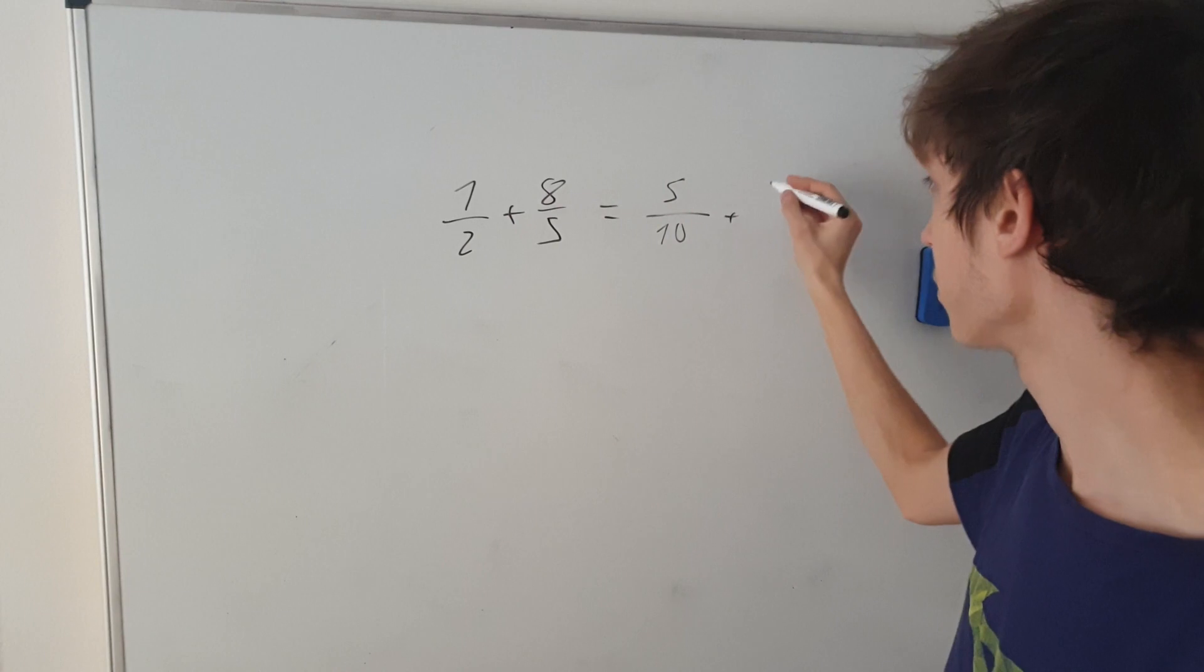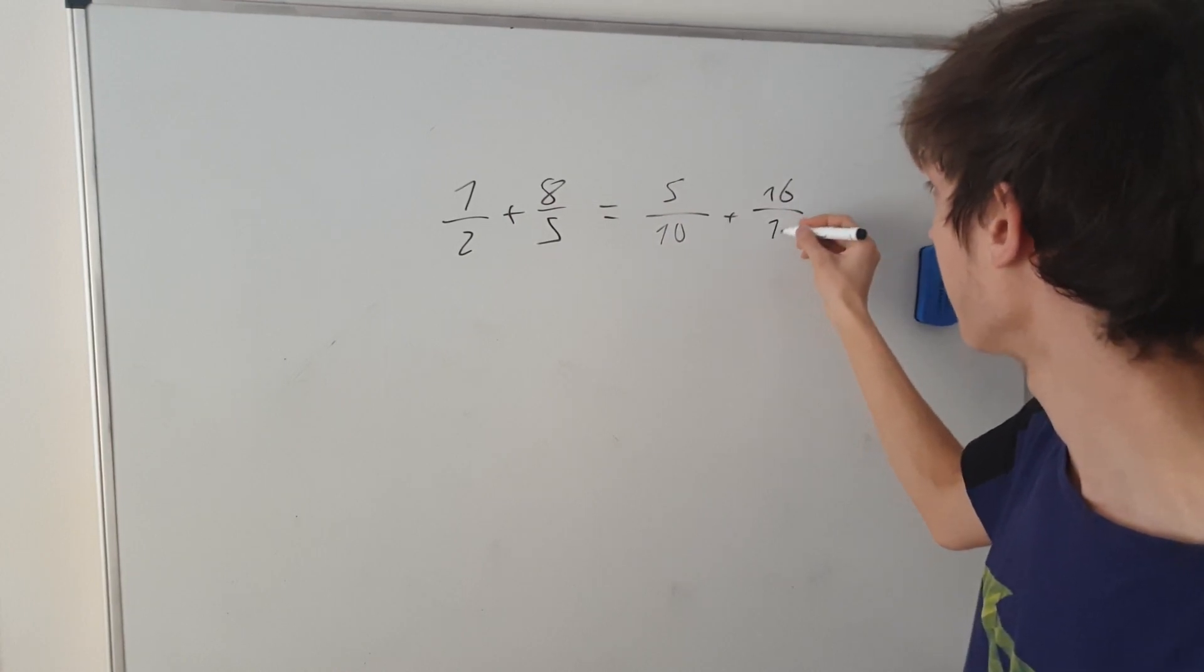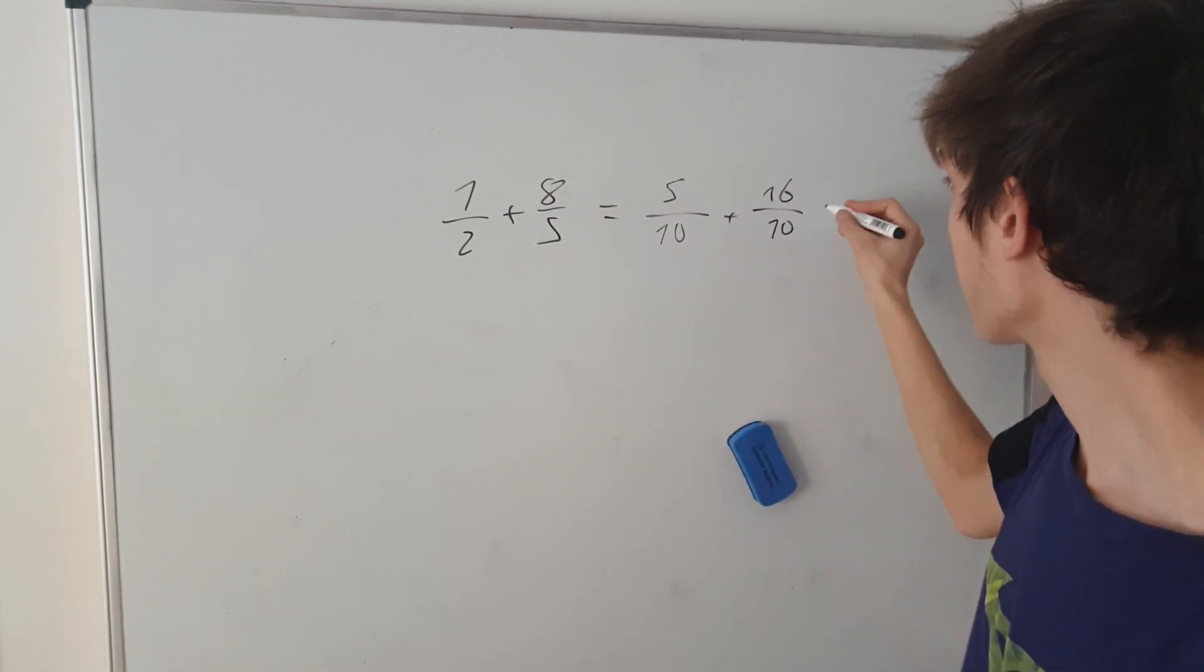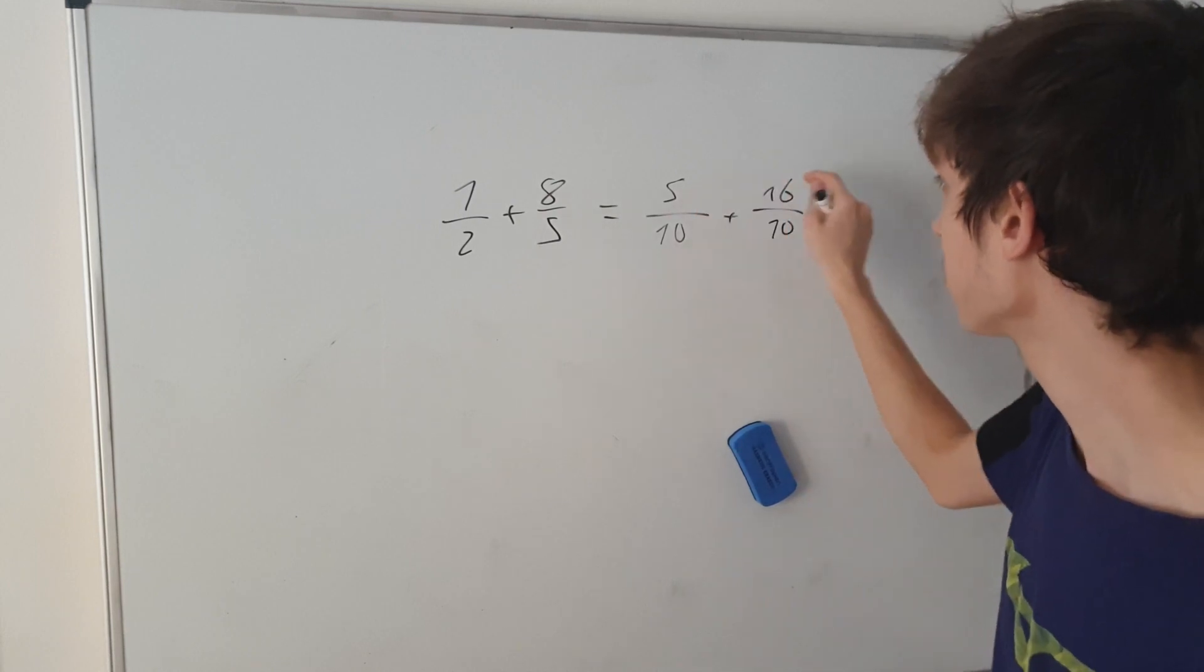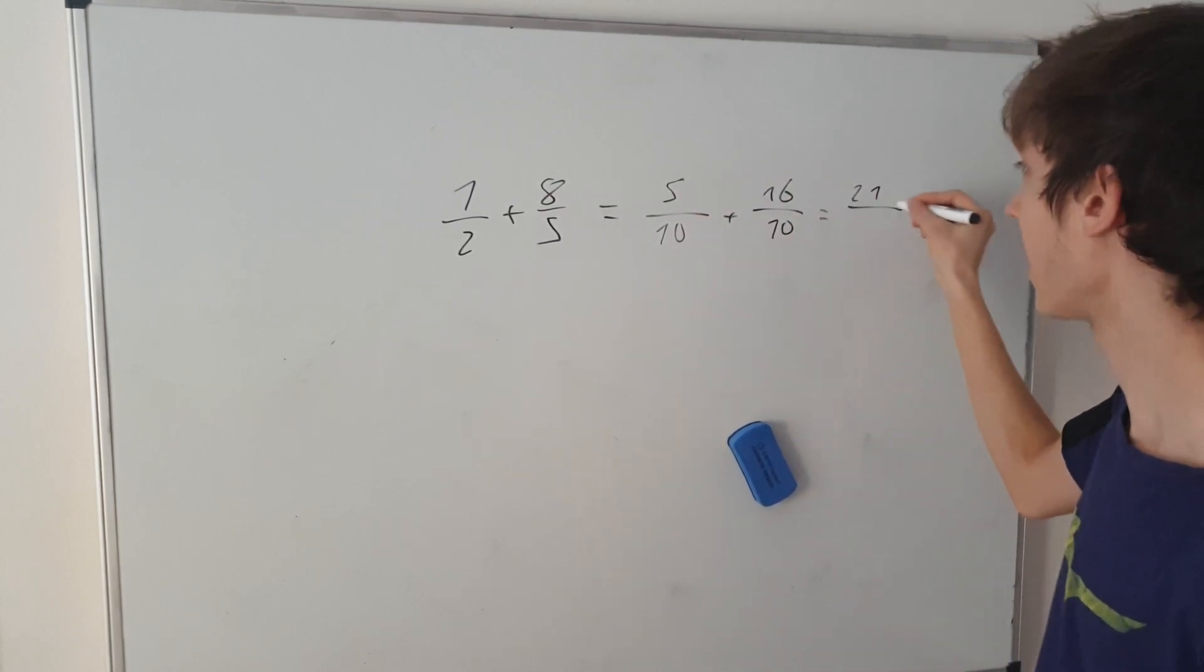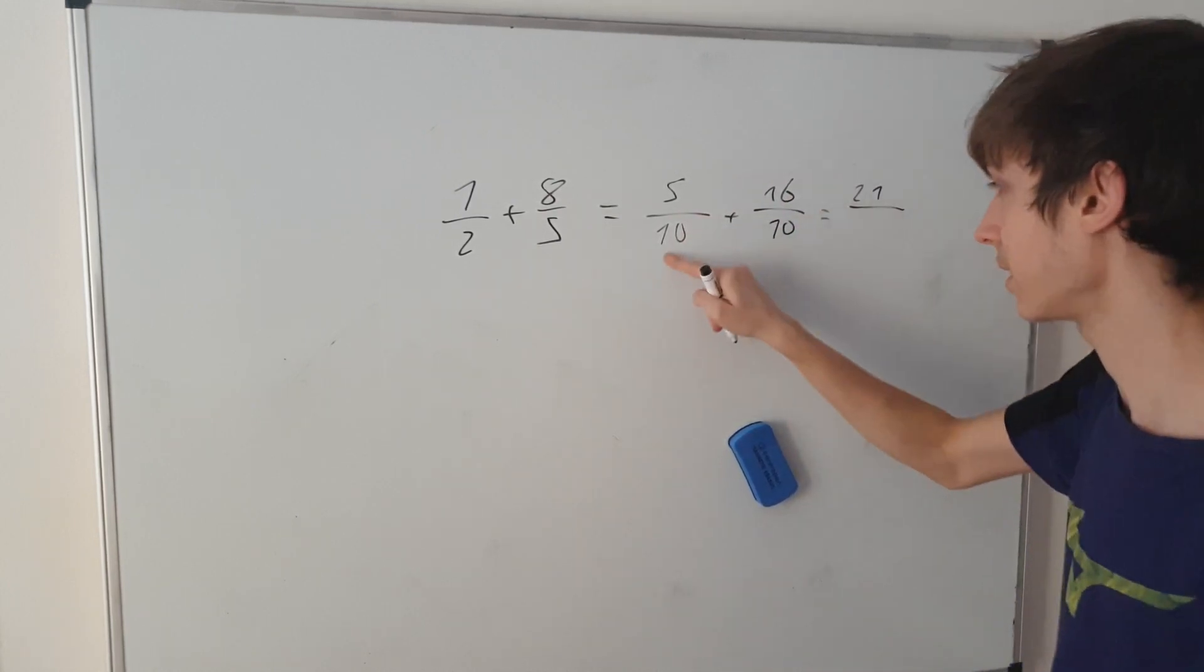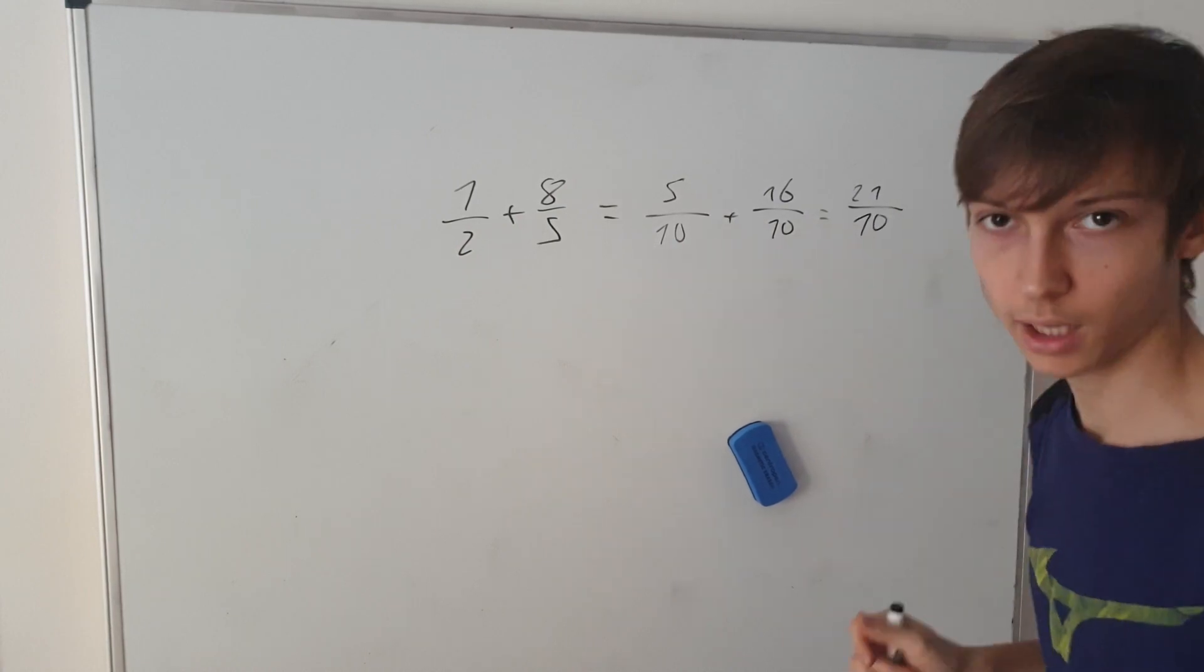And then, this by 2 and this by 2. So, we get 16 over 10. So, what do we get? Add up these 2. 21. And the bottom is going to be the same as in both of these cases. So, 10. Okay?